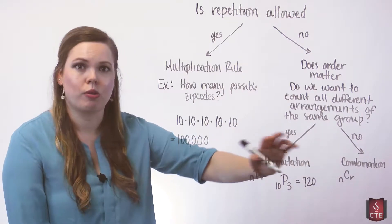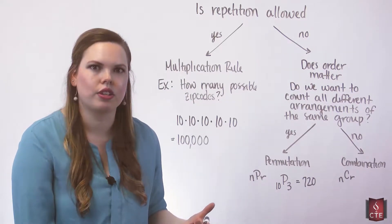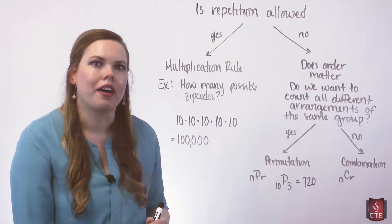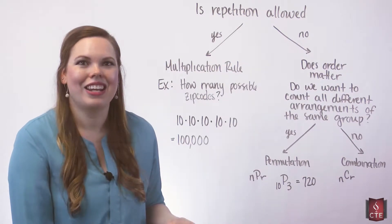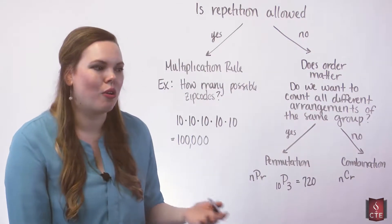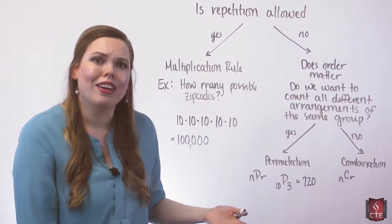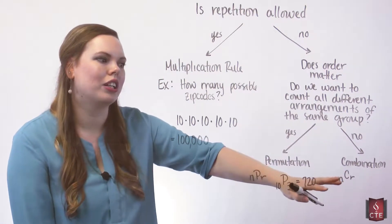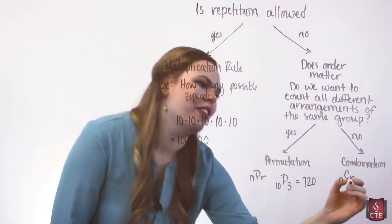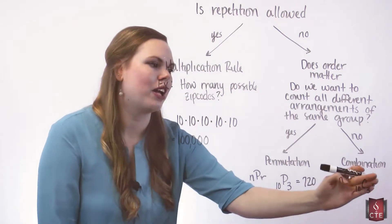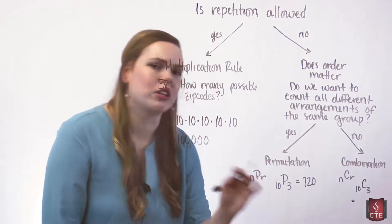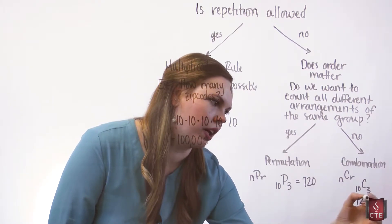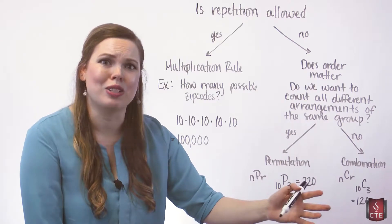Let's look at an example of a combination where we don't care about the order. If we take these 10 students and pick three of them to form a leadership committee — not assigning different roles, just picking them — it doesn't matter what number you're picked; it only matters if you're picked or not. We don't care about the order because everyone is on a three-person committee doing the same thing. So we know we're going to use a combination. Repetition is not allowed, so that would be 10C3. How many ways can we choose three people from 10? We don't want to count all different arrangements of the same three people. This ends up being 120.